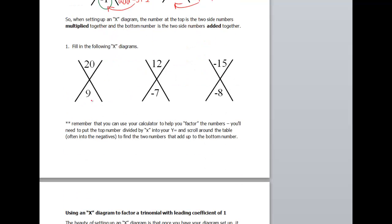So I give you the numbers at the top and the bottom, and you have to come up with the numbers on the side. So I need two numbers that multiply to 20 and add to 9. Okay, if you're good with factoring, these might come to you pretty easily. But let's go ahead and bring up the calculator.